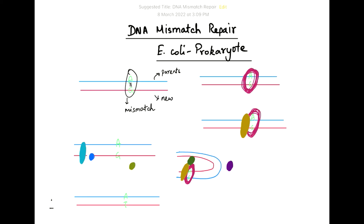So what will happen is that at a distance from this mismatch region, there will be a sequence of DNA GATC.